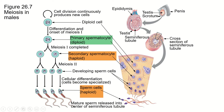Within the testes there are these series of tubes called seminiferous tubules, and within those we have a layer of cells that are diploid cells that just sit there and do mitosis to create cells that are going to do meiosis and create sperm. So these do mitosis, they create a new diploid cell, and then that cell starts meiosis. So we have this diploid cell, 2N.